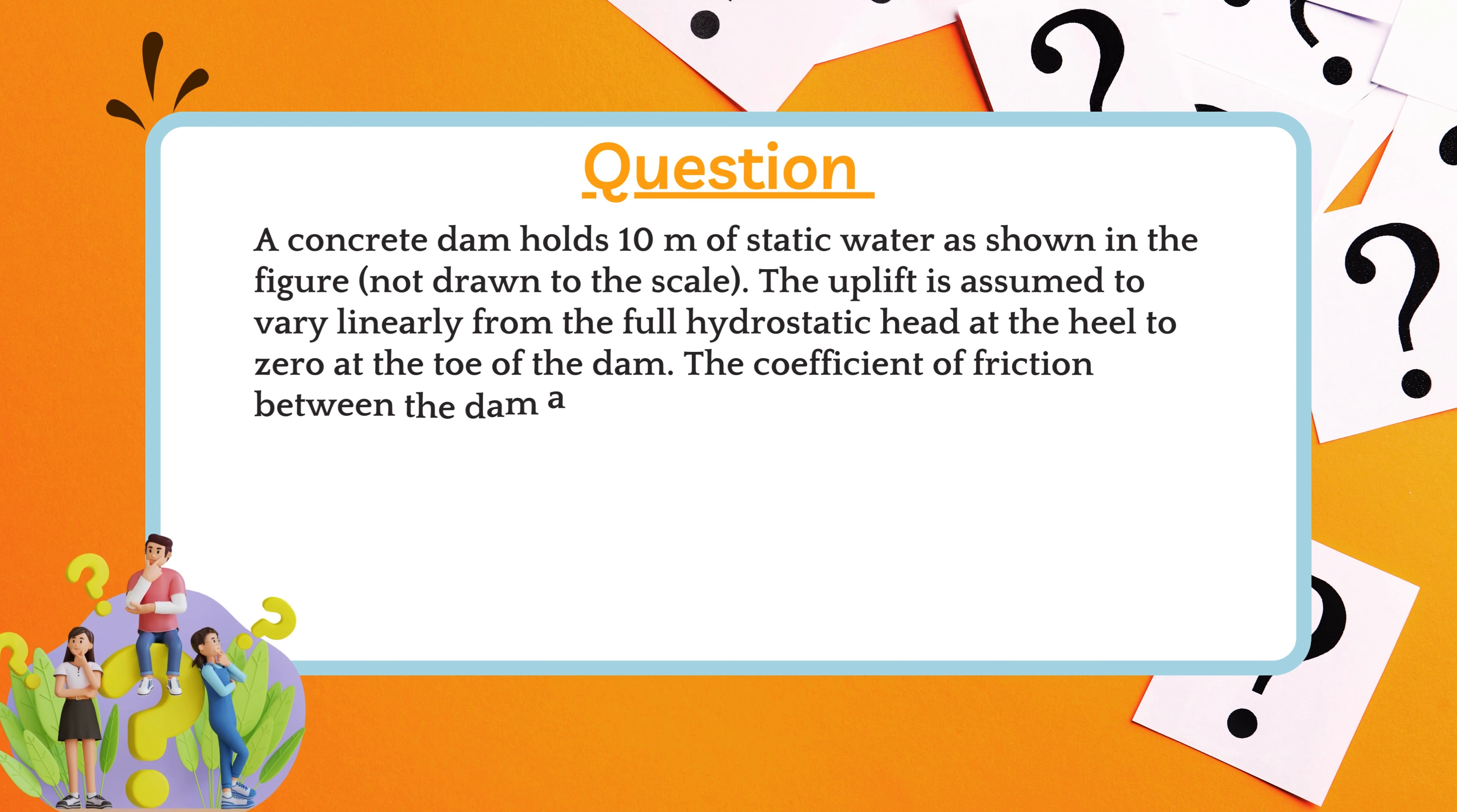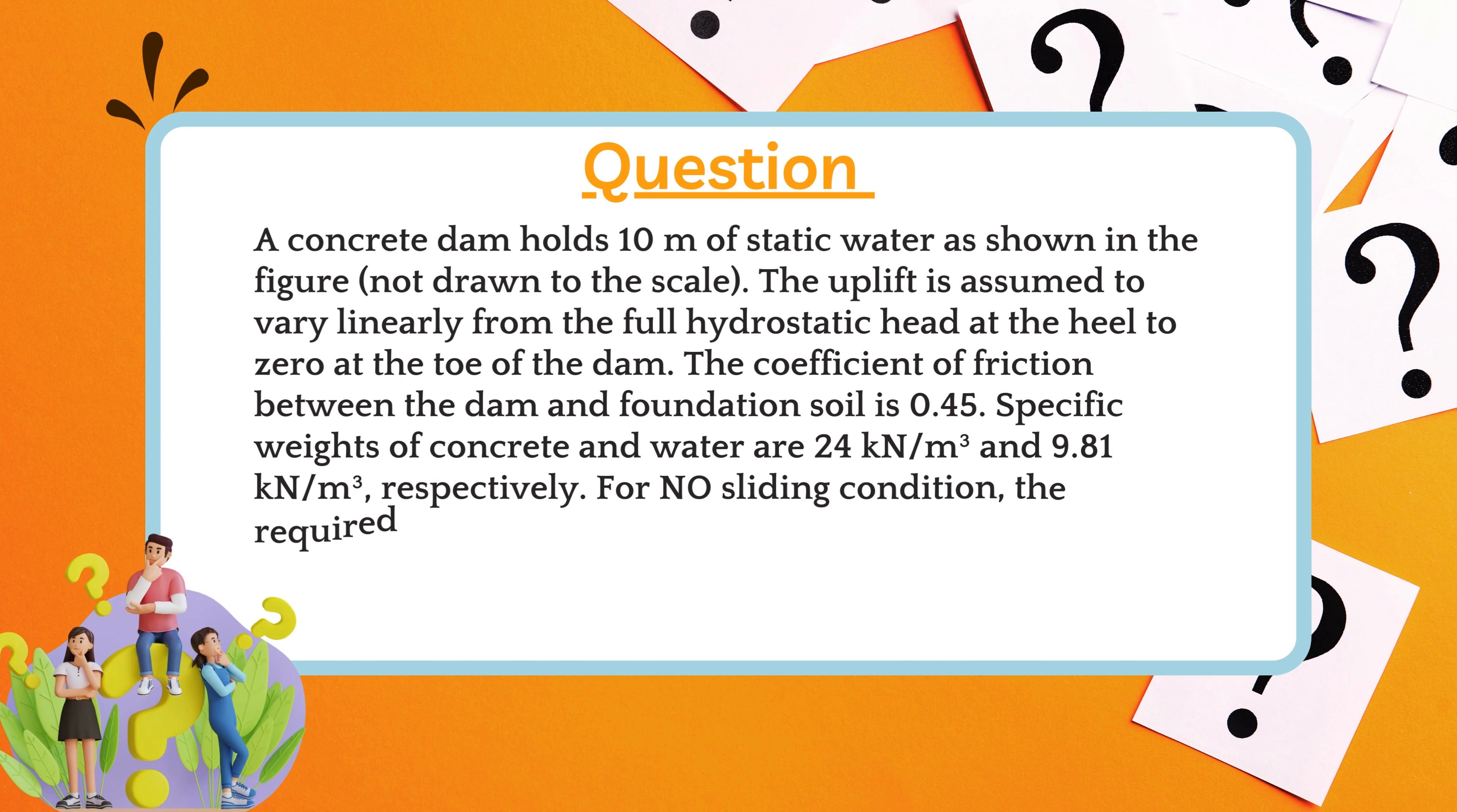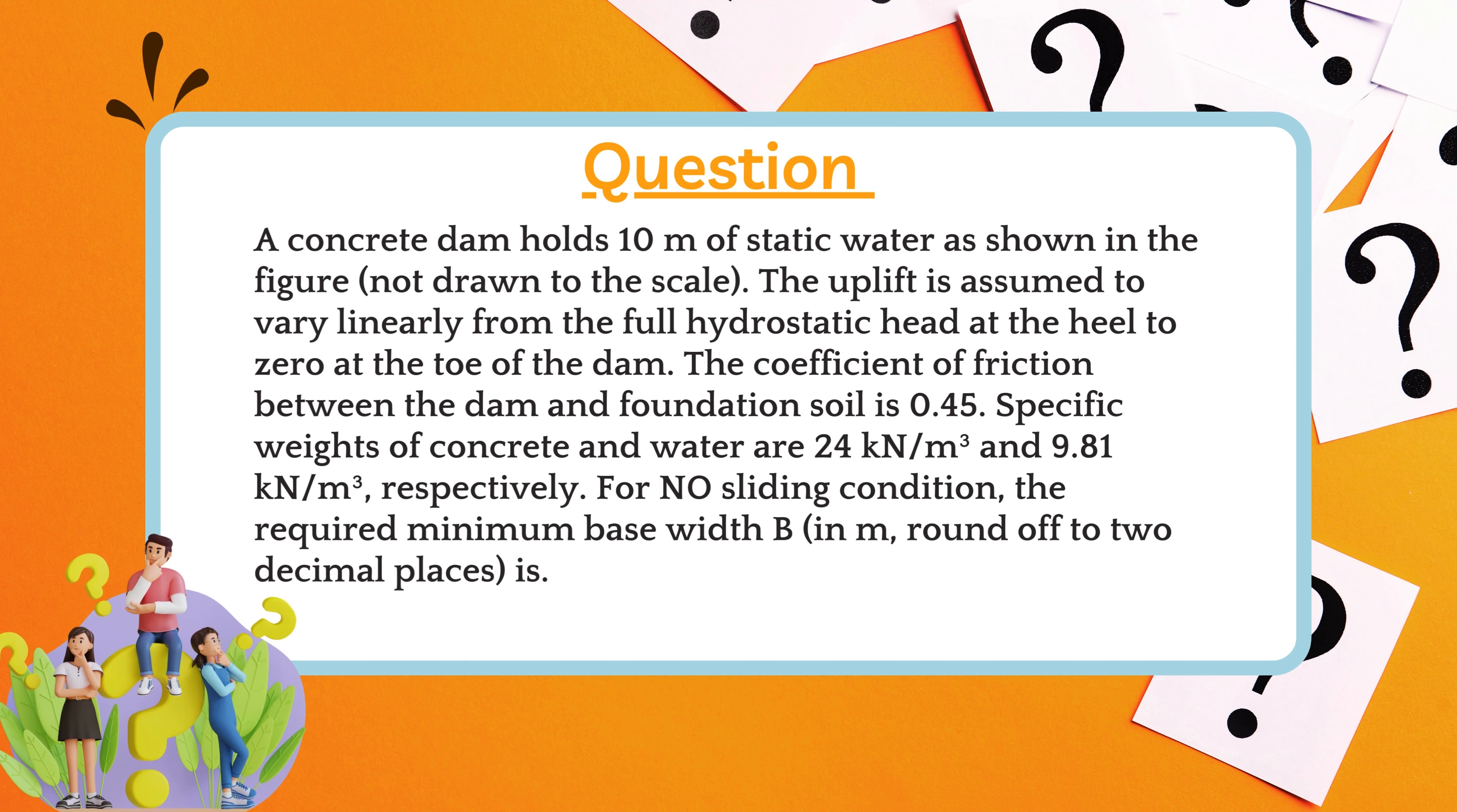The coefficient of friction between the dam and foundation soil is 0.45. Specific weights of concrete and water are 24 kN/m³ and 9.81 kN/m³ respectively. For no sliding condition, the required minimum base width B is asked. Here we use a formula.